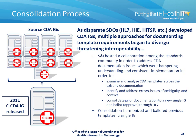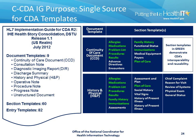As disparate standard development organizations developed CDA implementation guides, multiple approaches for documenting template requirements began to diverge, threatening interoperability. The Standards and Interoperability Framework within ONC hosted a collaboration among the standards community in order to address CDA documentation issues which were hampering understanding and consistent implementation — to examine and analyze CDA templates across the existing documentation, to identify and address errors, issues of ambiguity, and conflict, and to consolidate prior documentation into a new single implementation guide and ballot through HL7. The consolidation effort harmonized and balloted previous templates into a single implementation guide. The goal was to provide a single source for CDA templates for common use cases, including templates for nine document types, comprised of 60 different section templates, and across those sections, 82 distinct entry templates. A modular approach was used, and where possible, sections and entries were reused across parent templates.